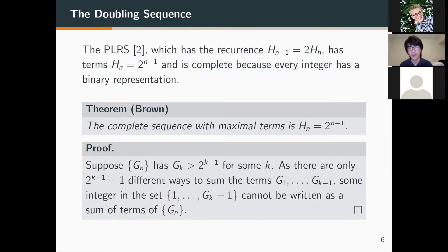Suppose a complete sequence Gn exceeds the doubling sequence at some point. As there are only 2^(k−1) − 1 different ways to sum the terms from G1 to G_{k−1}, and the set of integers from 1 to G_k − 1 contains at least 2^(k−1) integers, there must be some integer in that set which cannot be written as the sum of the terms from G1 to G_{k−1}.